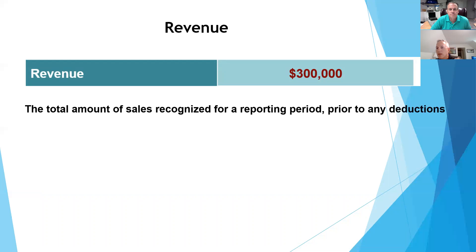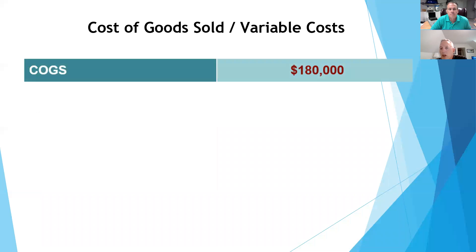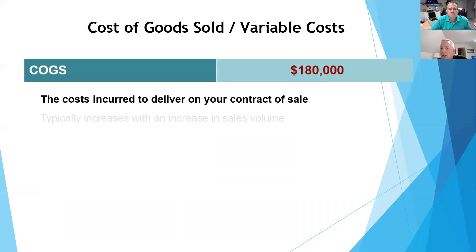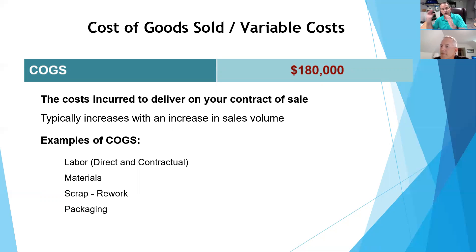Revenue is how much money we made — net revenue, selling goods and services. Cost of goods sold is what we like to call variable costs. For example, commissions: if you pay a salesperson a commission, that is a variable cost because the more that person sells, the more you pay them. But if you pay them through payroll, then it becomes a fixed expense under overhead.